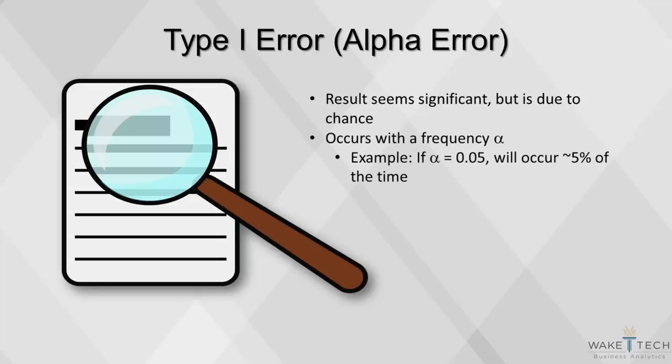Thus, if alpha, our critical value, is 0.05, then a type 1 error will occur 5% of the time.